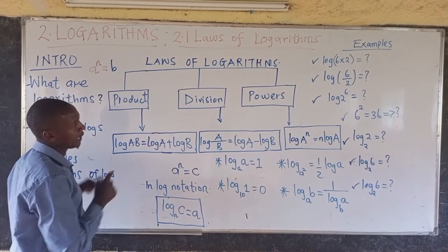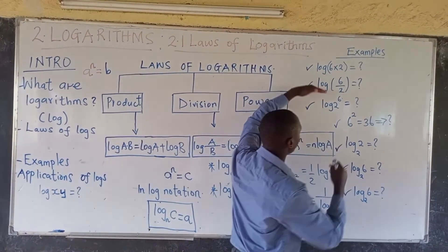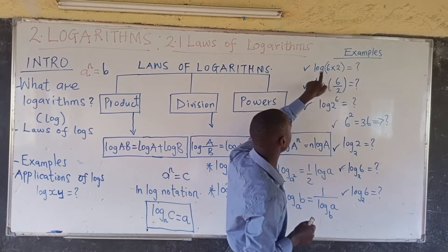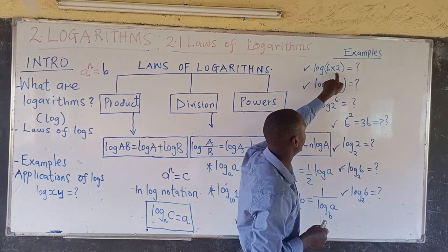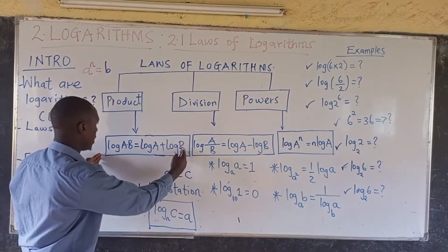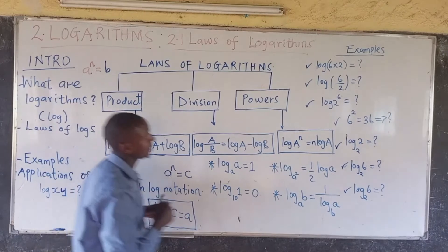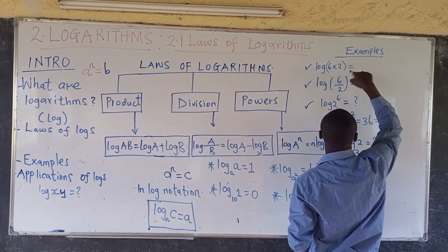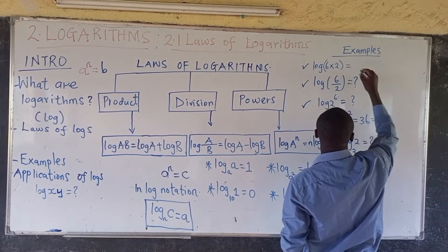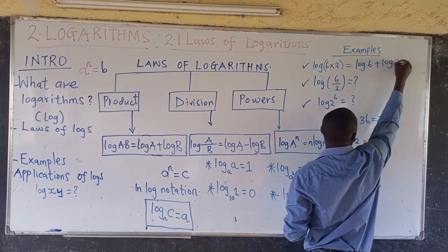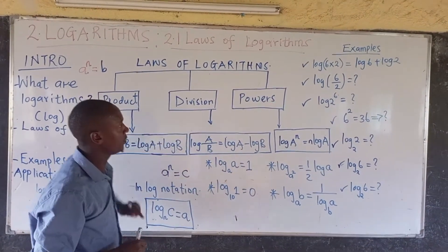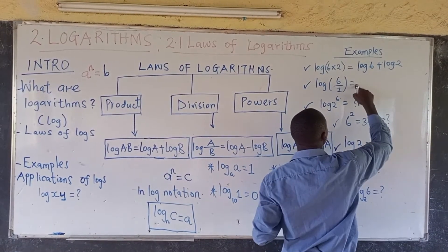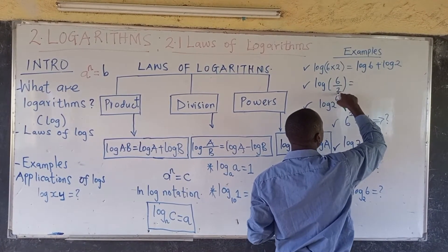For all three cases, let's do an example for each one. For the first law, we have log of 6 multiplied by 2. According to the product law, the result is going to be log 6 plus log 2. In the second case involving division, if you have log of 6 divided by 2, the result is log 6 minus log 2.